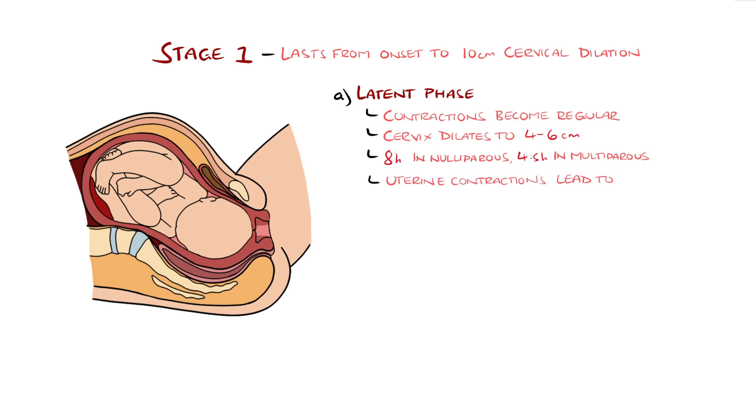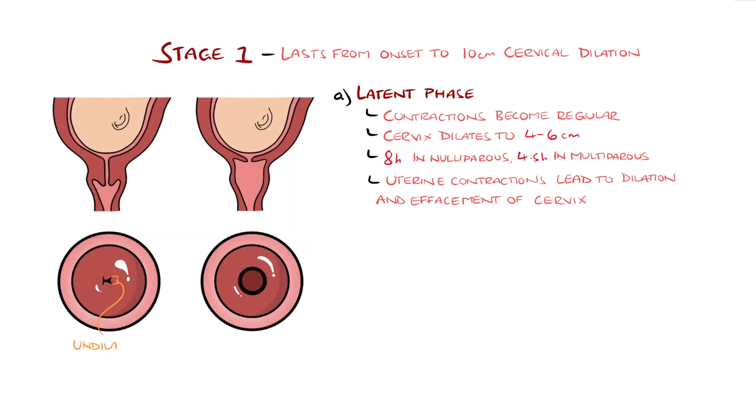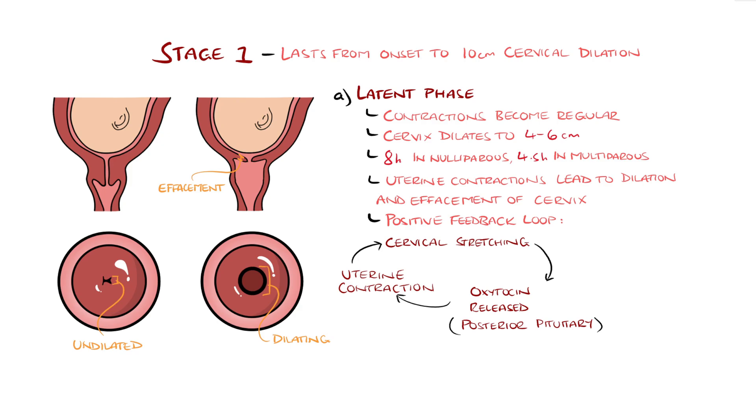The contractions pull on the thicker cervical tissues, causing them to dilate as well as to become thinner, called effacement. Initially, these contractions occur every 5-30 minutes, lasting 30 seconds, before then lasting 60 seconds every 3-5 minutes. There is an example of a positive feedback loop here, with cervical stretching causing the release of oxytocin from the posterior pituitary, which stimulates uterine contraction, which in turn leads to more cervical stretching. There is also release of prostaglandins from the placenta that facilitate the uterine contractions.